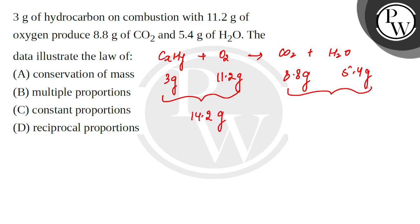If I see the total weight of the product side, this will be 14.2 grams. Reactant side and product side are equal, meaning mass is not destroyed or created. This data shows the law of conservation of mass, which is one of the laws of chemical combinations. The rest of the options are ruled out.